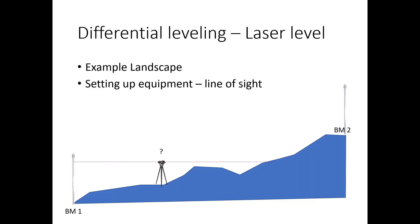Moving into the example — we have an example landscape, a hilly area. Benchmark 1 is our point of known elevation, and we want to know the elevation of Benchmark 2 up on top of this hill. The laser level only gives us a singular line of sight, a level plane, and our rod and instrument can only go so high — so how do we get there?